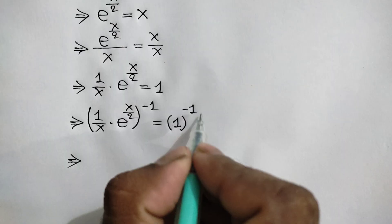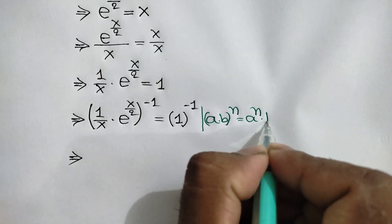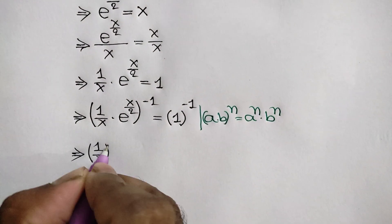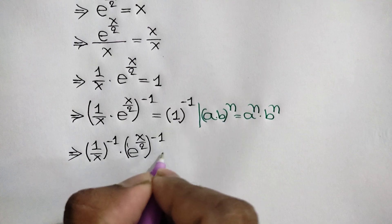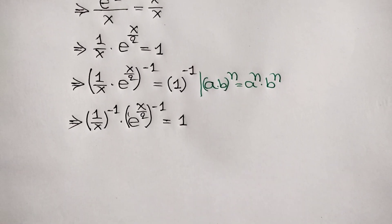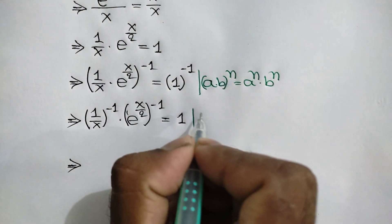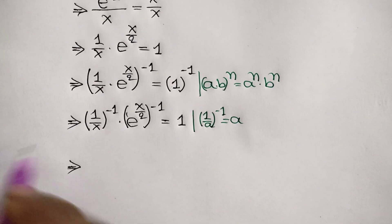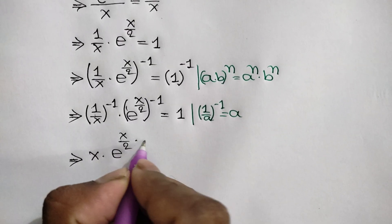We know that a times b, whole to the power n, is equal to a to the power n times b to the power n. Applying this rule, we get 1 over x whole to the power negative 1 times e to the power x over 2 whole to the power negative 1 equals 1. Using the formula 1 over a whole to the power negative 1 equals a, this gives x times e to the power negative x over 2.